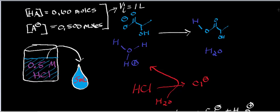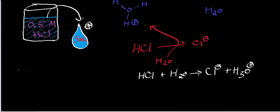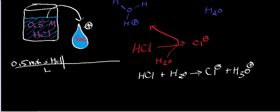I have a beaker of 0.5 molar HCl, and I'm going to take a 5 milliliter sample of that to see how the pH changes in my buffer. Since my measurements of HA and A- are in moles, I want to convert the hydrochloric acid into those units as well. I know that I have 0.5 moles of HCl per liter, and I need to get that in units of moles.